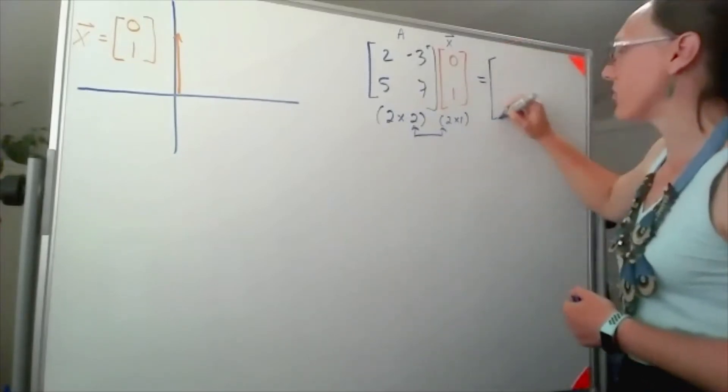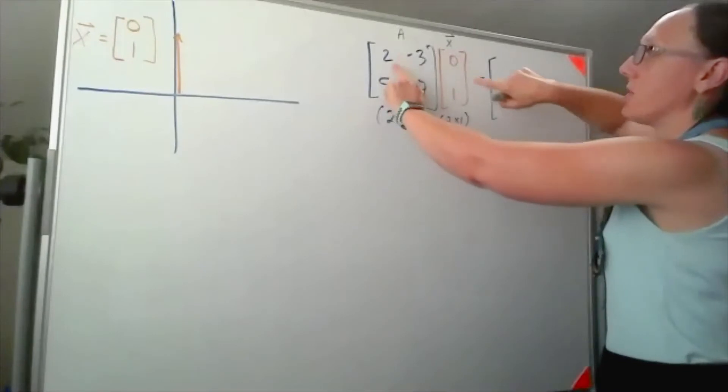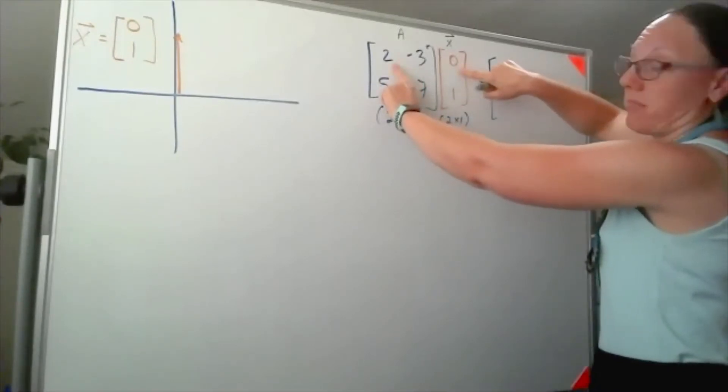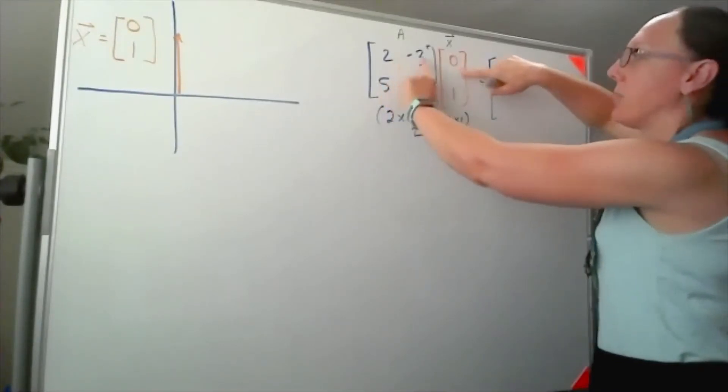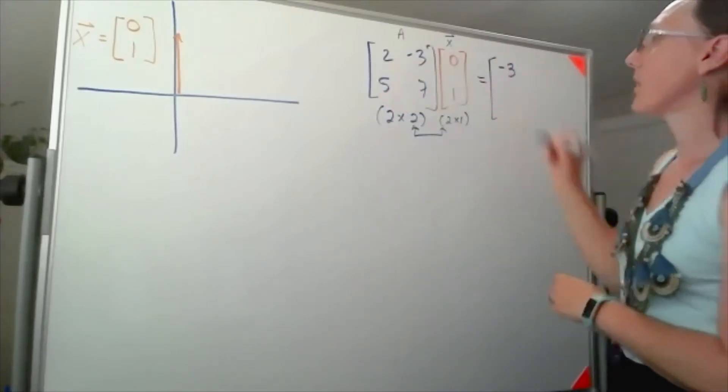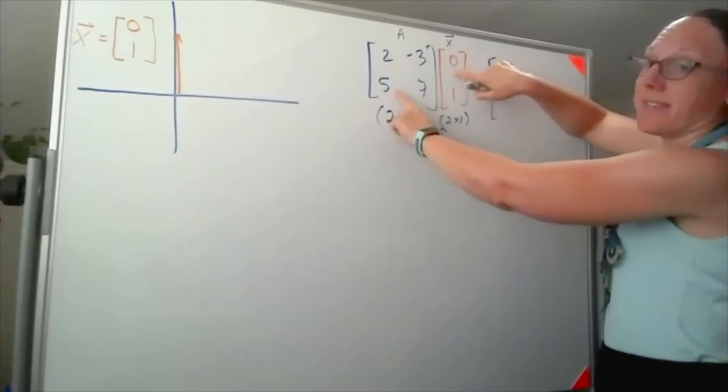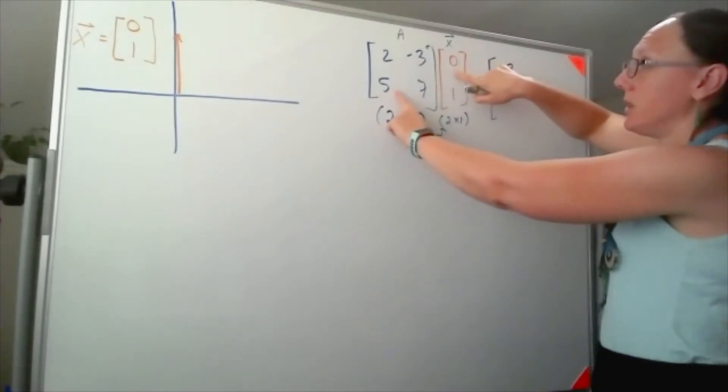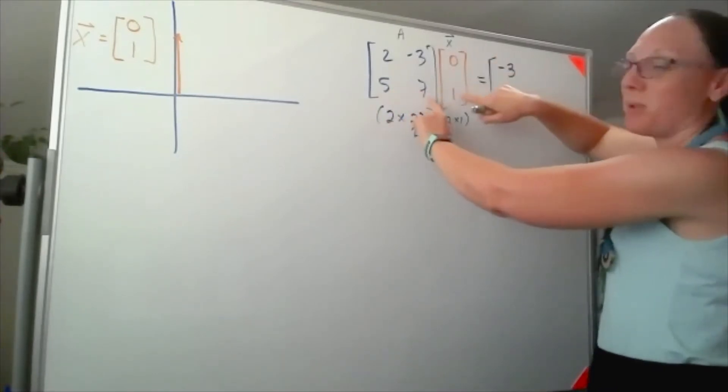When we do this, I'm going to have 2 times 0, plus negative 3 times 1. And then I'll have 5 times 0, that's 0, plus 7.